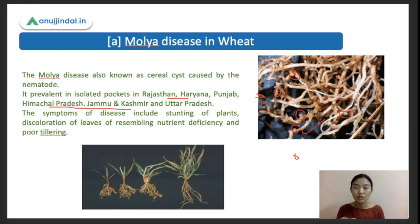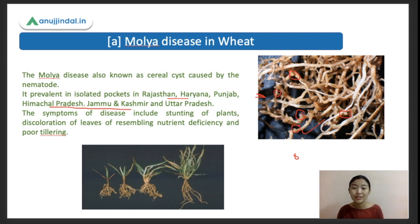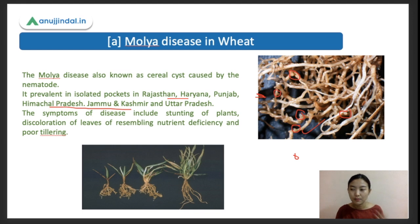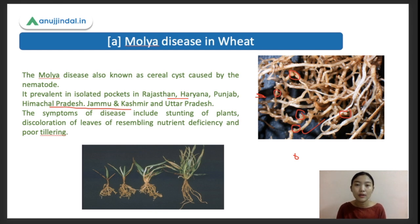There will also be discoloration and yellowing of the leaves - chlorosis may also occur. The disease may resemble nutrient deficiency, and a lot of times it gets confused with nutrient deficiencies. A distinct characteristic symptom is that there will be patches of stunted growth in the field - it won't be uniform. Whereas nutrient deficiency symptoms are usually more uniform.